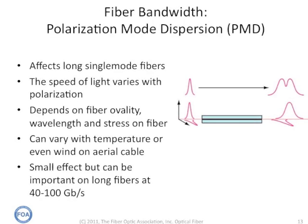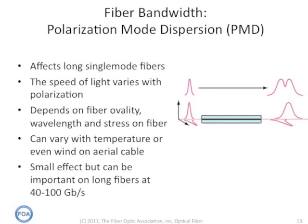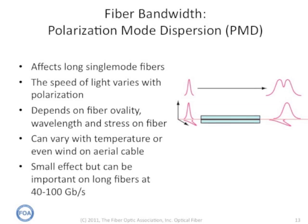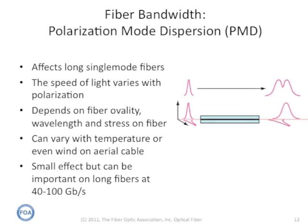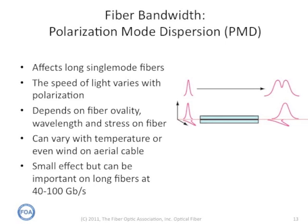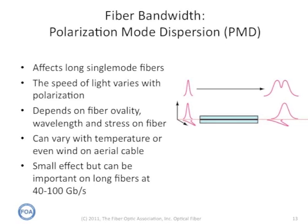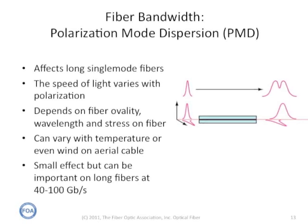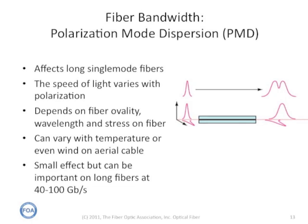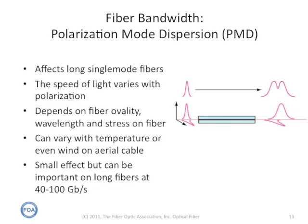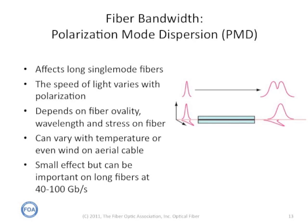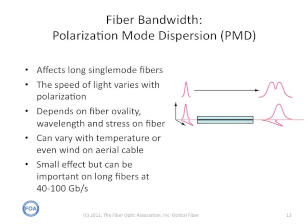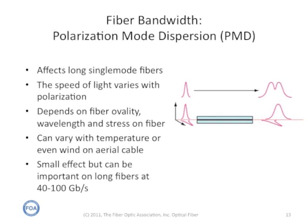Long single-mode fibers used typically for long-distance telecommunications have other factors that affect dispersion — for example, polarization. Polarization means that the light waves are traveling in different planes in the fiber, caused by stress on the fiber or the fact that the core isn't perfectly round. Polarization mode dispersion can vary with temperature or even wind stress on an aerial cable. It's a very small effect, but very important for long fibers operating at 40 to 100 gigabits per second or more.